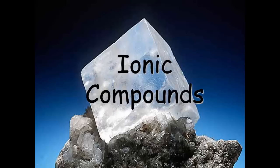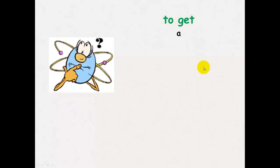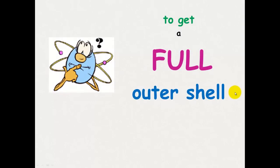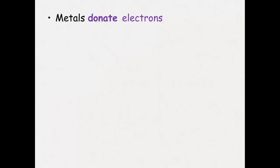Ionic compounds form between metals and non-metals. It's every atom's dream in life to get a full outer shell of electrons. And this is how ionic bonding forms.